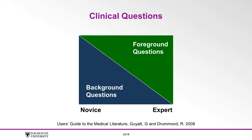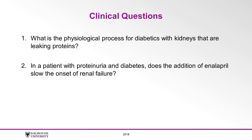There are two broad categories of questions: background and foreground questions. Background questions are less specific and usually try to close gaps in general knowledge of human physiology and of disease processes. Clinicians who are responsible for patients with a particular problem will be more likely to ask foreground questions. We can see two questions on a similar topic — the first is a background question and the second is a foreground question.